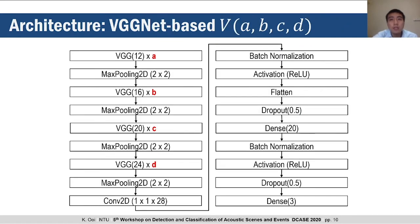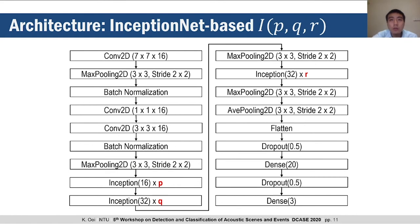We call the variant of VGGNet used for submission V(A,B,C,D), where A, B, C and D are parameters that control the depth by varying the number of VGGK blocks. For submission, we used A and B equal to 2 and C and D equal to 3. Similarly, the variant of InceptionNet is called I(P,Q,R), where P, Q and R are depth parameters controlling the number of InceptionK blocks. For submission, we used P and R equal to 2 and Q equal to 1.